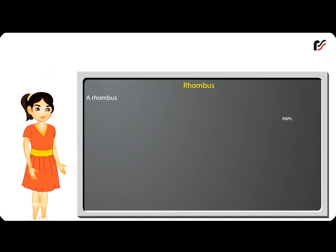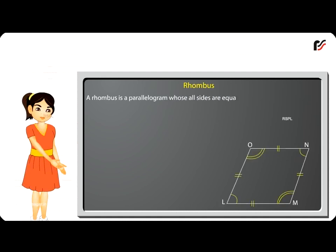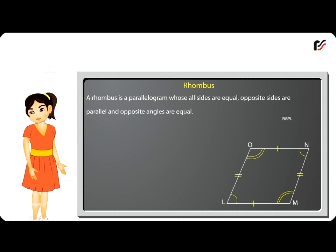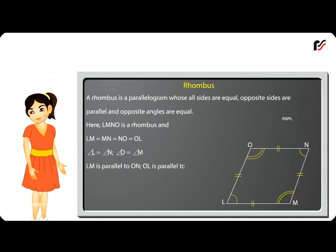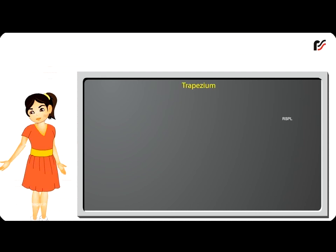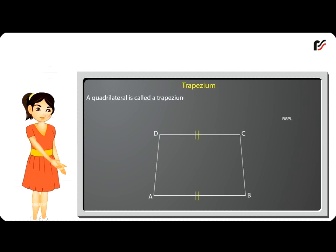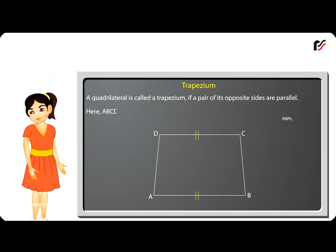Rhombus: A rhombus is a parallelogram whose all sides are equal, opposite sides are parallel and opposite angles are equal. Here, LMNO is a rhombus where LM = MN = NO = OL, angle L = angle N, angle O = angle M, LM is parallel to ON, and OL is parallel to NM. Trapezium: A quadrilateral is called a trapezium if a pair of its opposite sides are parallel. Here, ABCD is a trapezium where AB is parallel to DC.